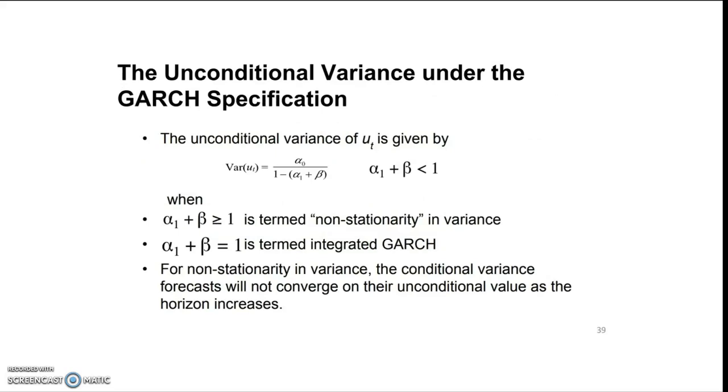The unconditional variance under the GARCH specification is given by this equation when α₁ + β < 1. When α₁ + β ≥ 1, this is termed non-stationarity in variance.